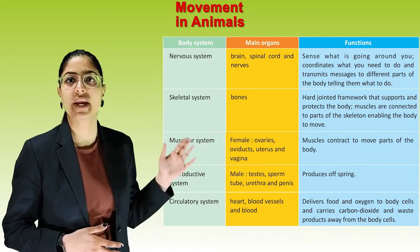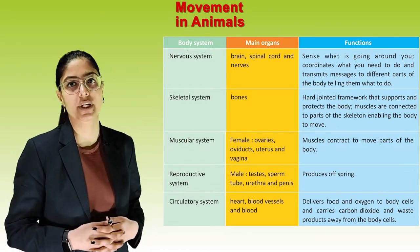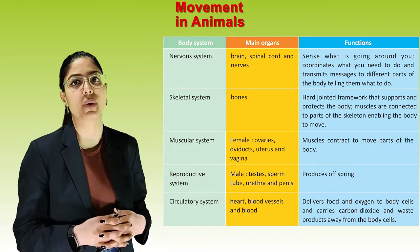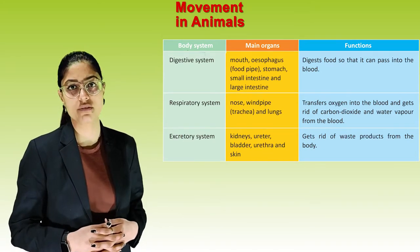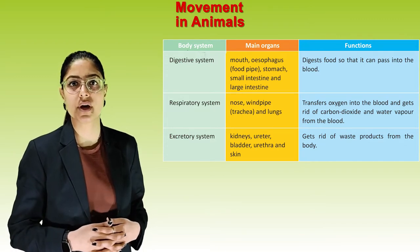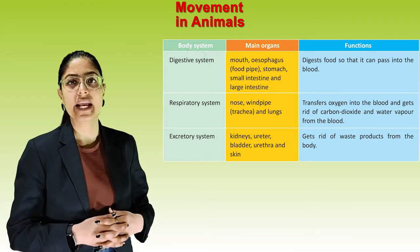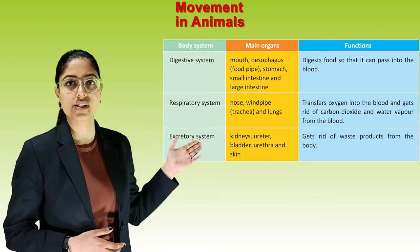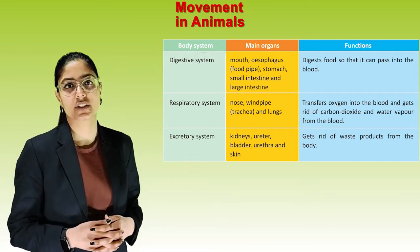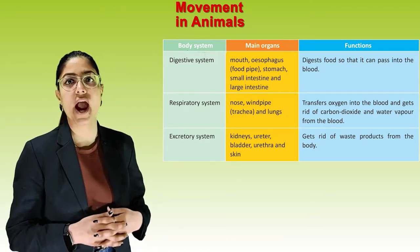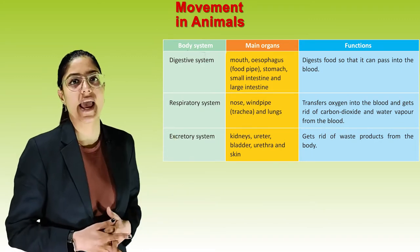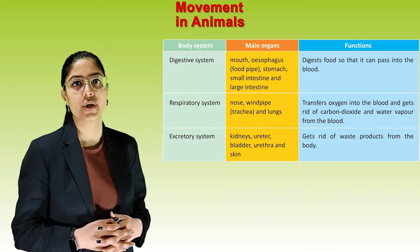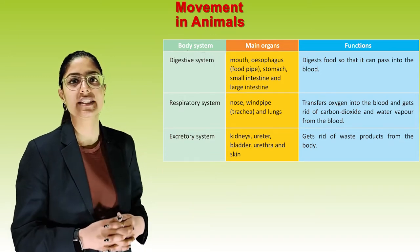The digestive system — mouth, esophagus (food pipe), stomach, small intestine, and large intestine — digests food so that it can pass into the blood. The respiratory system — nose, windpipe, and lungs — transfers oxygen into the blood and gets rid of carbon dioxide and water vapour. The excretory system — kidneys, ureter, bladder, urethra, and skin — gets rid of waste products from the body.